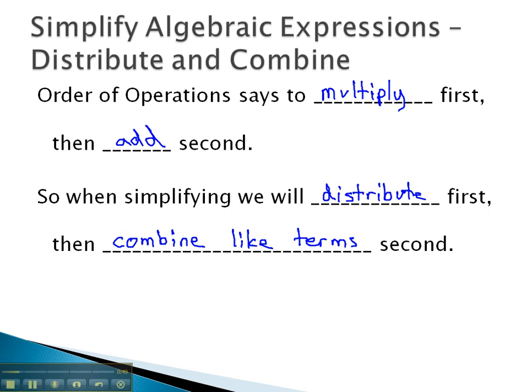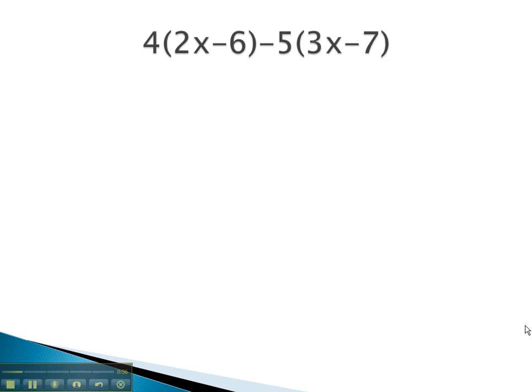So let's try a couple examples where we're asked to distribute first and combine like terms second. Here, there are several parentheses with numbers in front of them. When we see a parentheses with a number in front, we know we should distribute into it and multiply through the parentheses. 4 times 2x is 8x. 4 times negative 6 is negative 24.